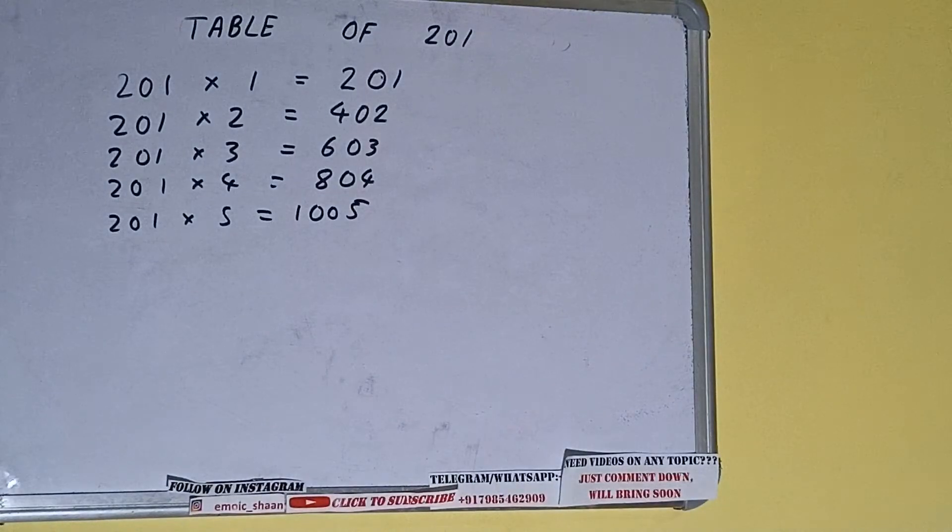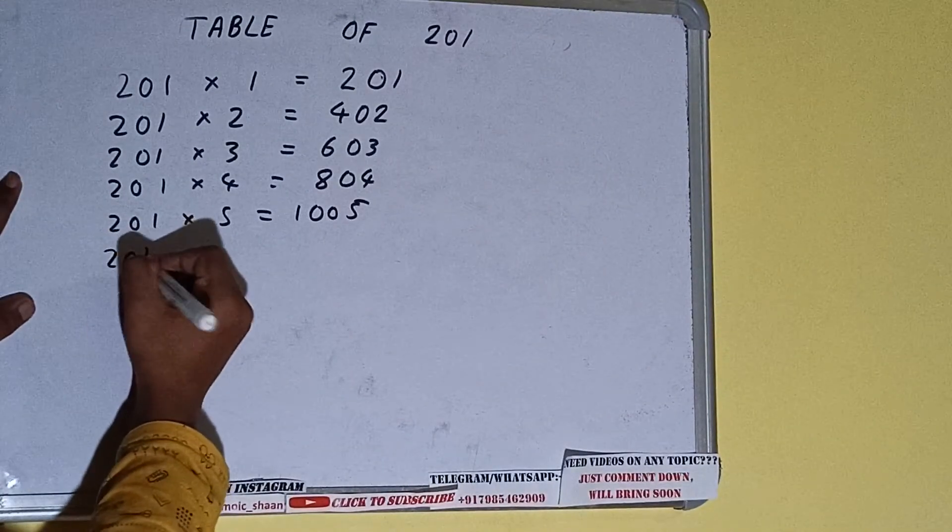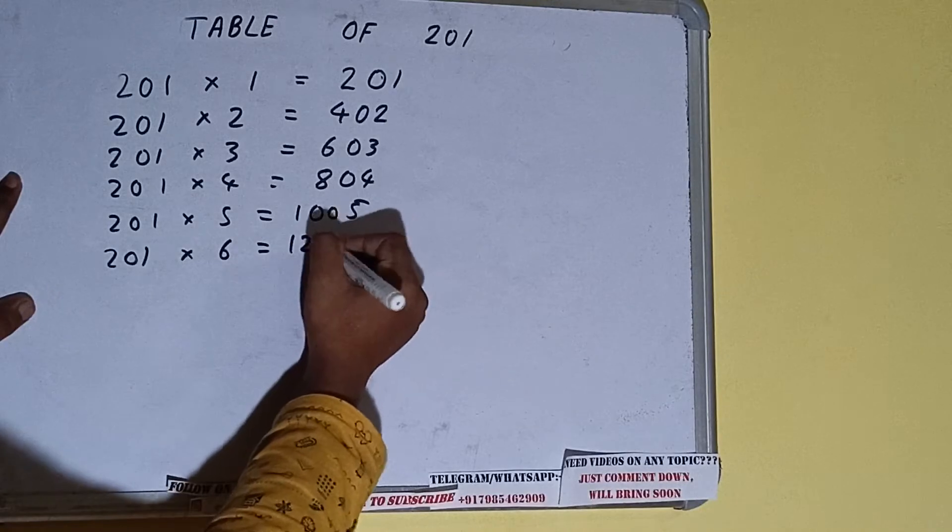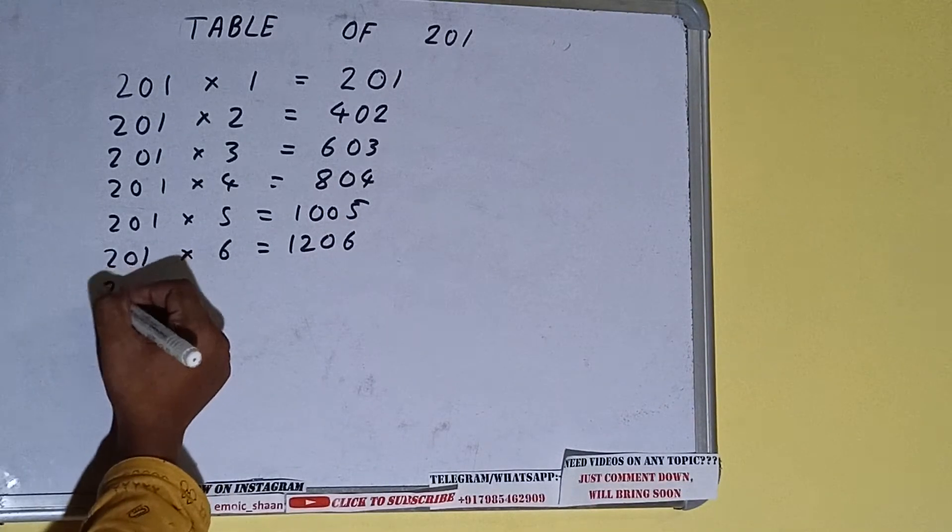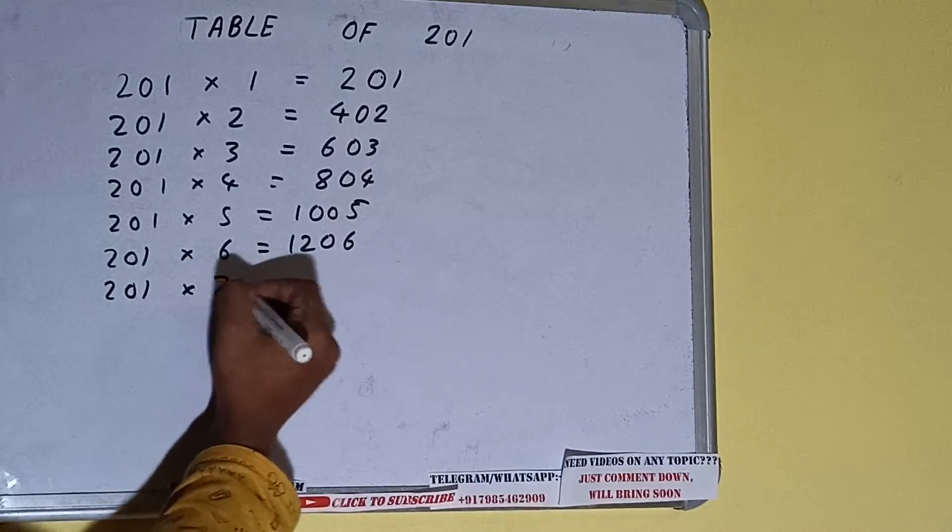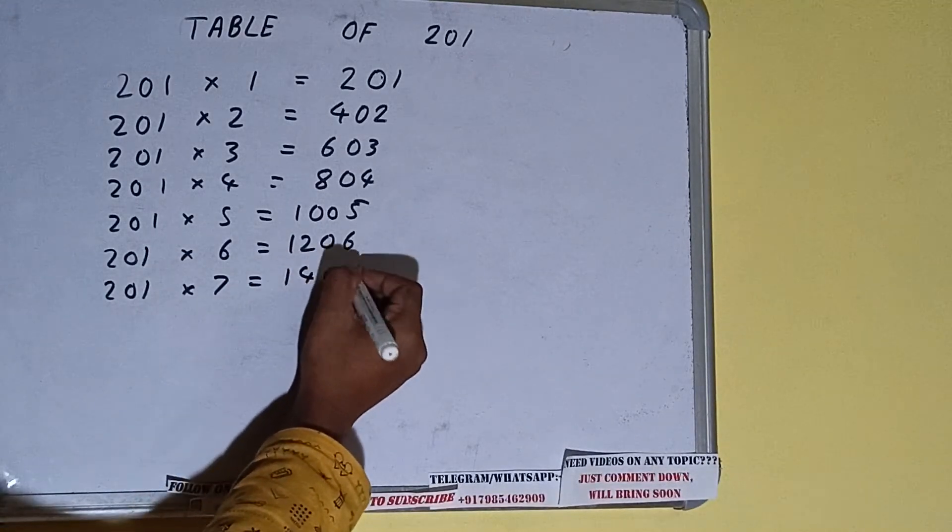201 into 6 times is 1206. 201 into 7 times is 1407.